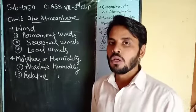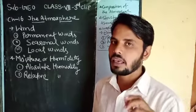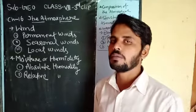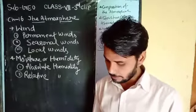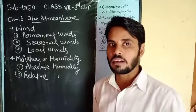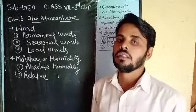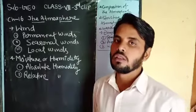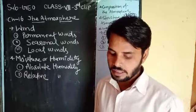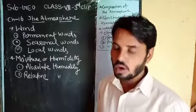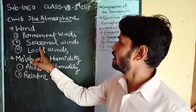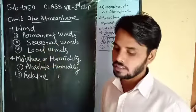ऐसी हवाएं जो सालों भर एक ही दिशा में चलती हों, उसे prevailing या permanent winds भी कहा जाता है। ये planet पे हमेशा होते हैं, किसी particular place में हमेशा एक ही दिशा में चलते रहते हैं। Permanent winds के भी कुछ sub-parts हैं जैसे trade winds, westerlies और polar winds। And the second type of winds is seasonal winds.